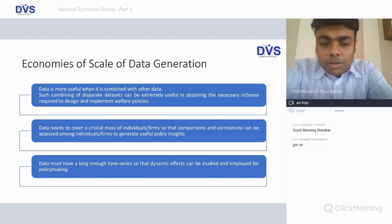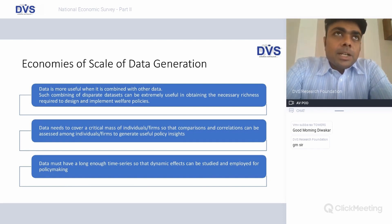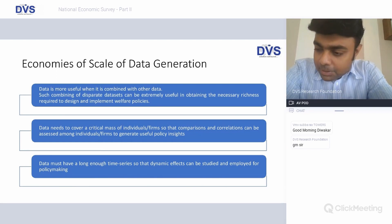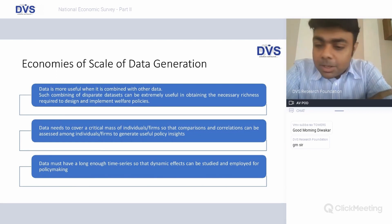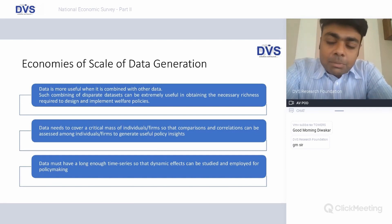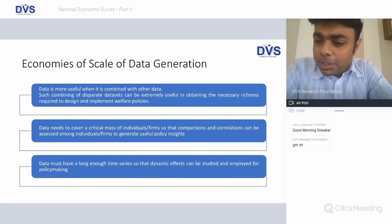When it comes to economies of scale for data generation, there are multiple data points through which data can be obtained — right from transport data to consumption data, web browsing data, spending patterns, and banking patterns. Data is more useful when you are able to combine it with other data. The correlation factor is a relationship between two or multiple variables, but for that we need a critical mass, similar to how exit polls require a critical mass of population studied over a period of time.